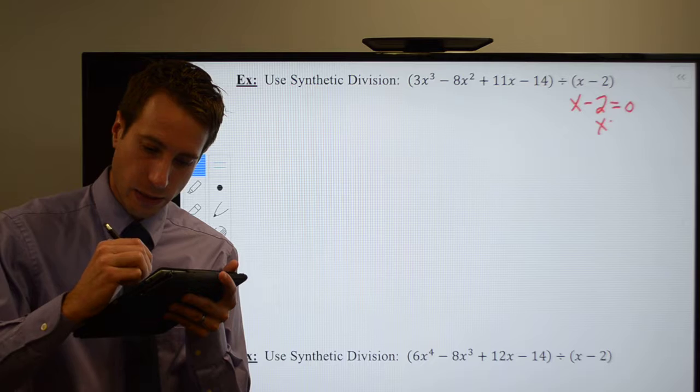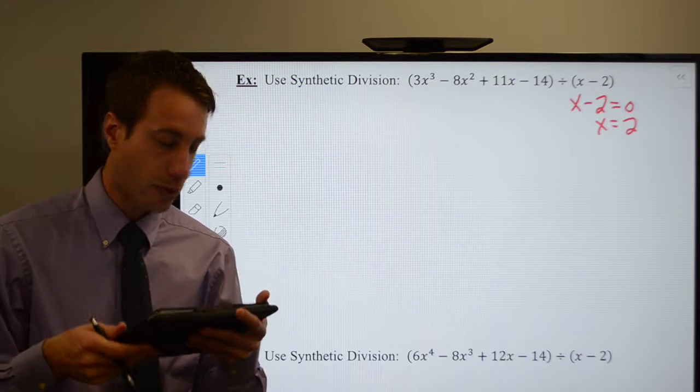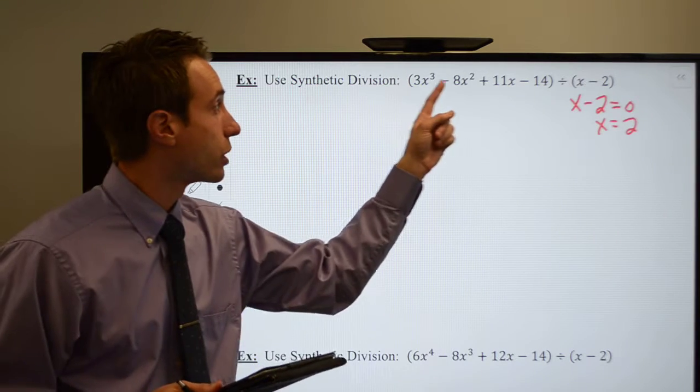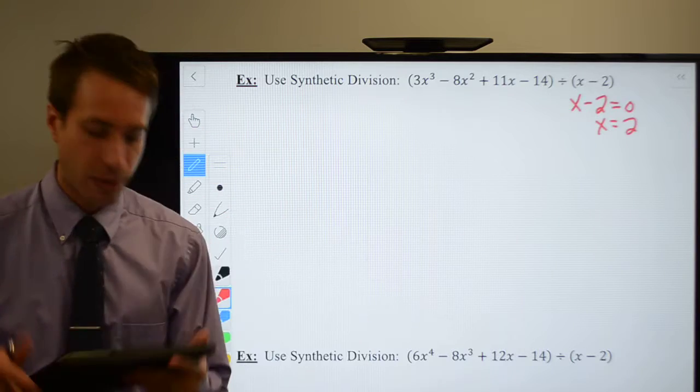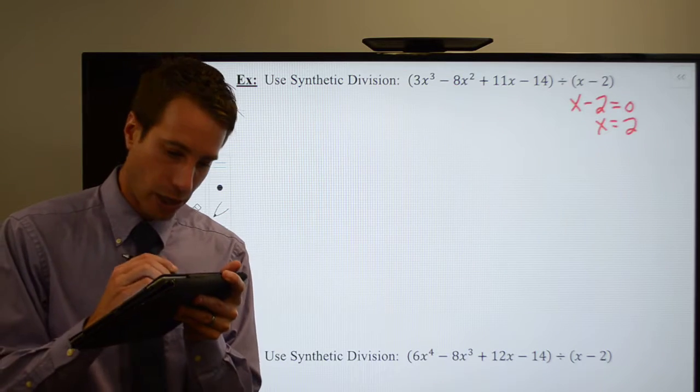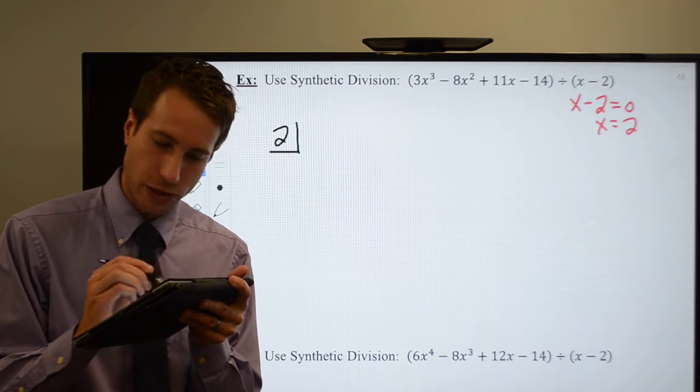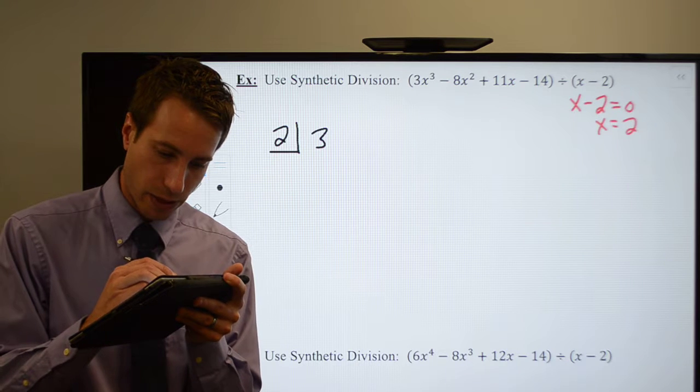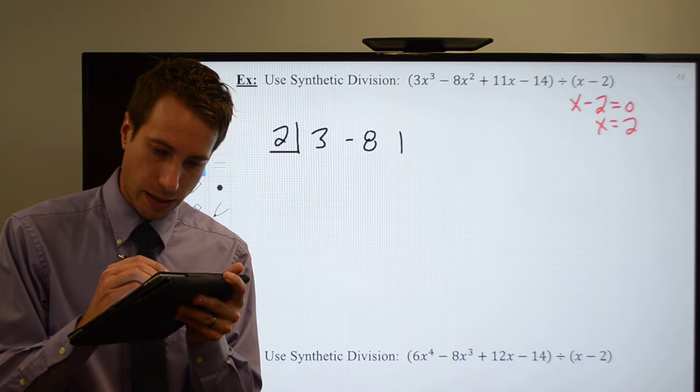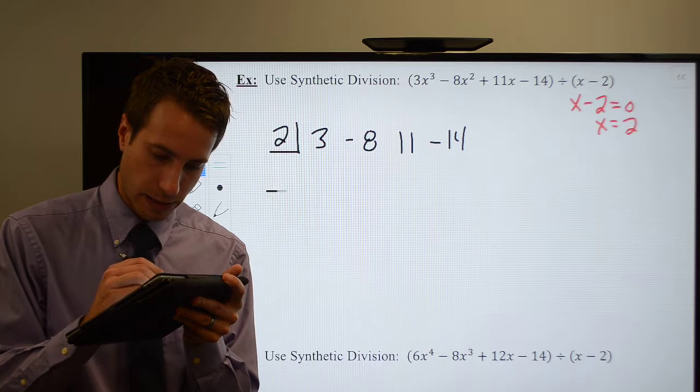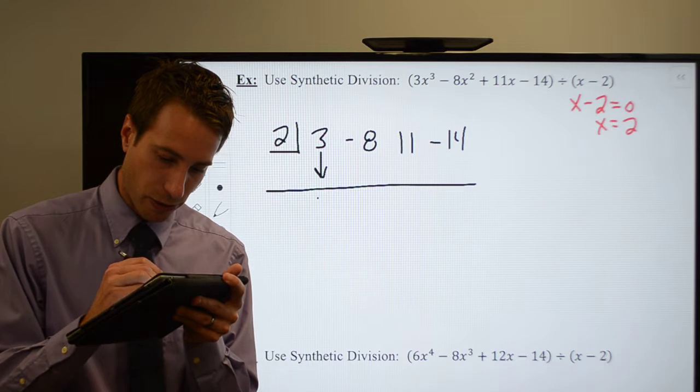First, we set this guy equal to 0, so I'm going to be doing synthetic division with a positive 2. Check for placeholders: 3, 2, 1, 0. Everybody's there. I don't need any placeholders, so we set up my synthetic division. The 2 goes inside the box: 3, negative 8, 11, minus 14. Bring down the 3.